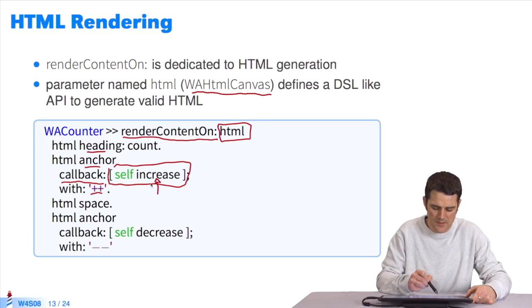the self increase method is executed. Clicking on minus minus prompts the execution of the self decrease method. It's so simple.